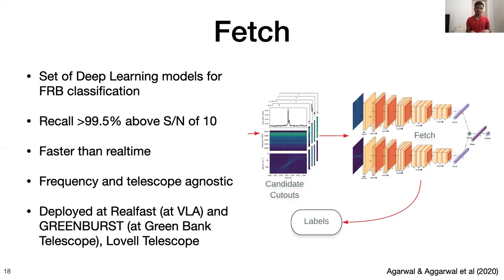After single pulse search and flagging are done, the candidates are passed on to FETCH, which is a set of deep learning models for FRB classification. It has a recall of more than 99.5% above a signal-to-noise of 10, meaning it is able to find more than 99.5% of FRBs from the data. It is faster than real time and can classify around 50,000 candidates in an hour. It does not require any retraining or fine-tuning — it's been trained to be robust to changes in frequency, telescope, and even RFI environment. That's why it has already aided in detections of several FRBs and has detected tons of single pulses from pulsars, having been deployed at different telescopes.